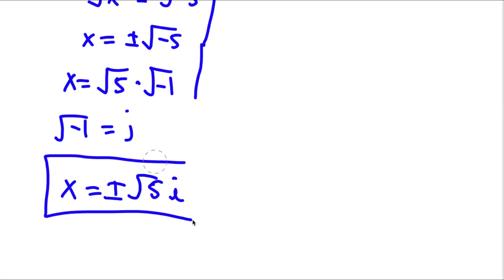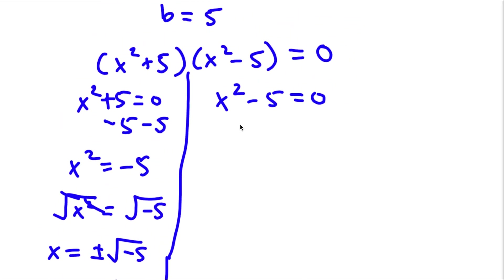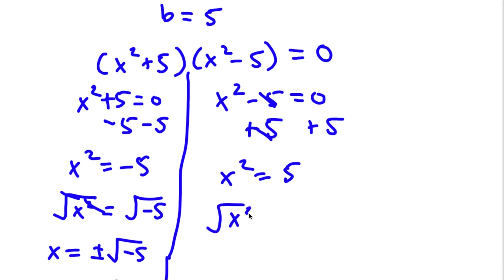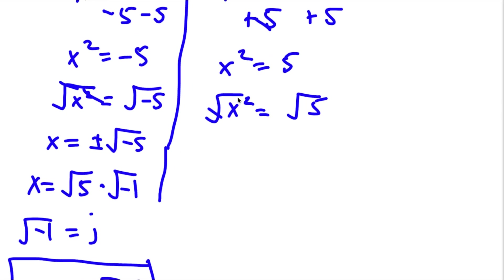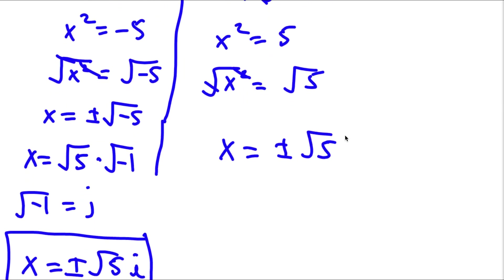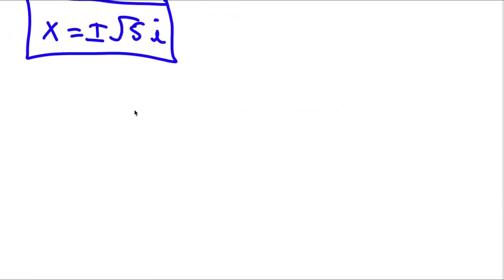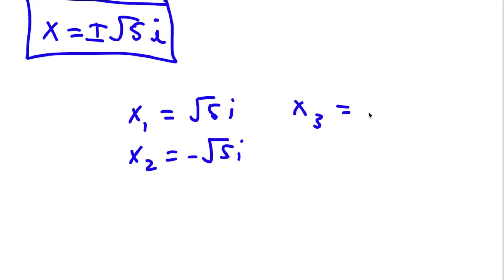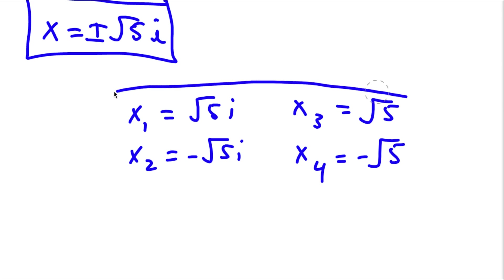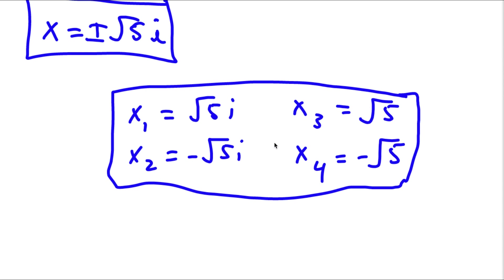So those are our first two solutions. For x squared minus 5 equals 0, I add 5 on both sides, giving x squared equals 5. Taking the square root on both sides gives x equals plus or minus the square root of 5. So my four solutions to this problem are: the square root of 5i, negative square root of 5i, the square root of 5, and negative square root of 5.